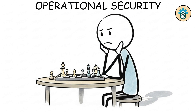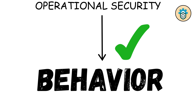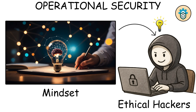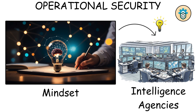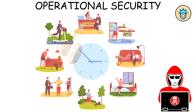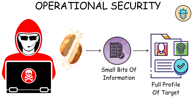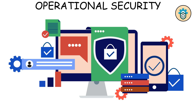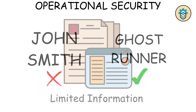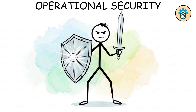Operational security — OpSec. Here's where strategy kicks in. Operational security isn't about software; it's about behavior. It's the mindset used by ethical hackers, military units, and intelligence agencies. It means thinking like an attacker: what could someone infer from your online activity, emails, or even your work routine? Hackers use breadcrumbs — small bits of data — to build full profiles of targets. So OpSec means hiding your patterns, using aliases, and never giving out more than necessary. In short, it's not just defense. It's deception.